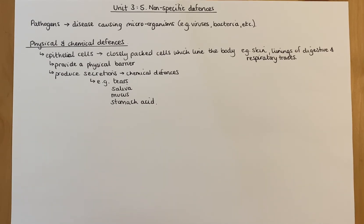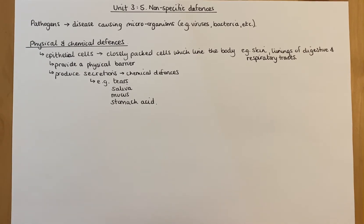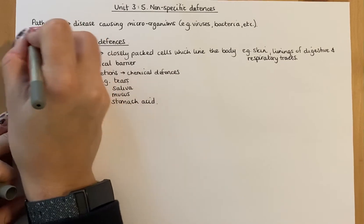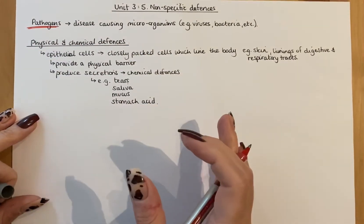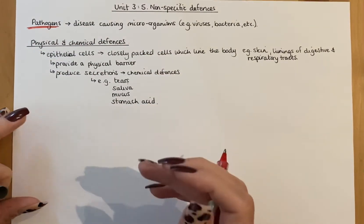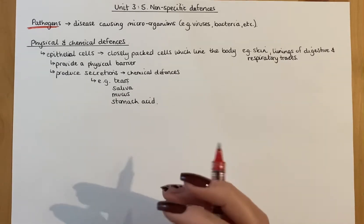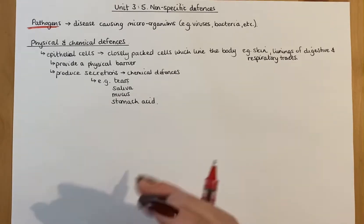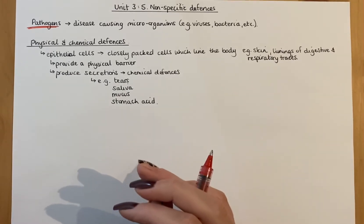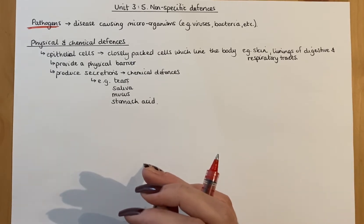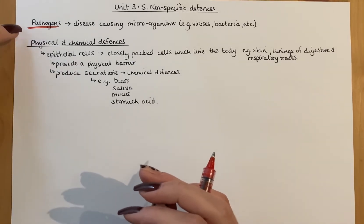There are a few things you need to know to begin with - some definitions and general things you'll probably already know. Pathogens should be something you've heard about from earlier in high school. Pathogens are microorganisms that cause disease - so bacteria, viruses, fungi, things like that. The whole point of having defenses is to defend yourself against pathogens.